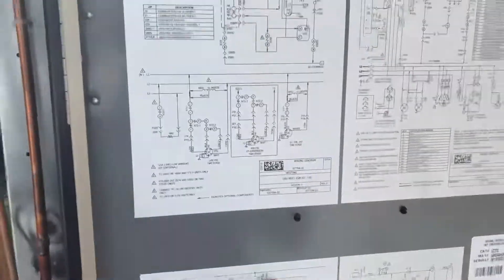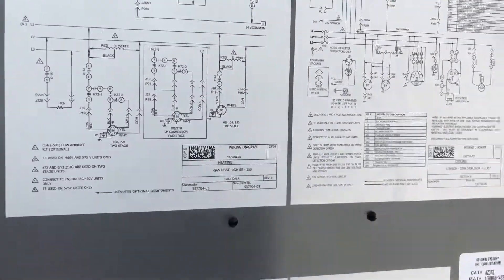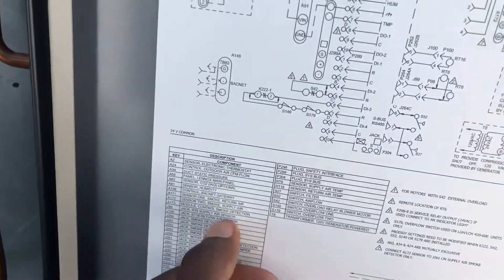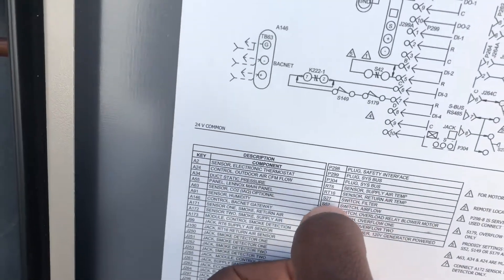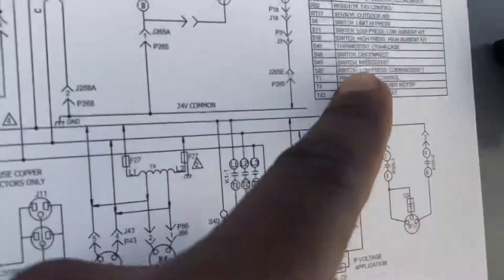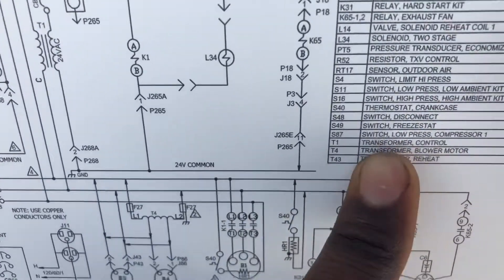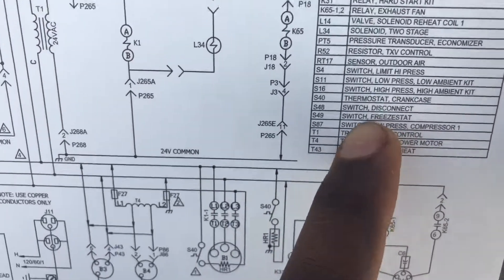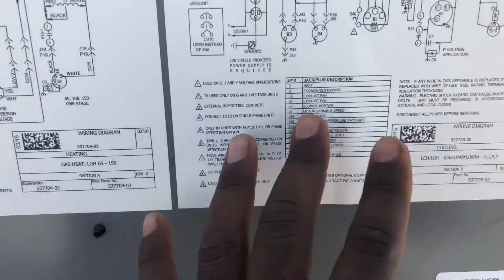If you look here on the door panel of these Linux units, you always have your legend. So if it says S49, you look for your S49, which is your freeze stat switch. If that didn't tell you it was a freeze stat, you always have it here. Let me zoom in so you can really see — S49 freeze stat, freeze stat switch.